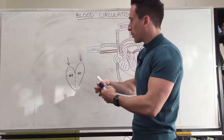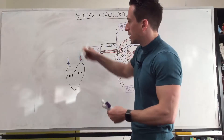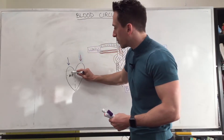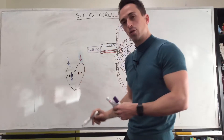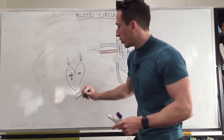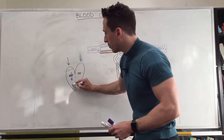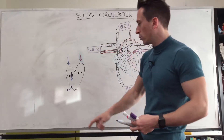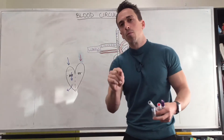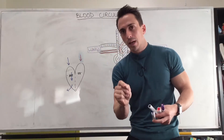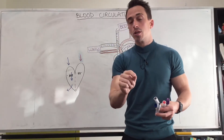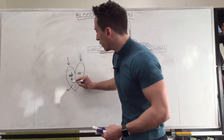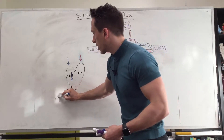So what we've got is blood coming in — let's start with the right hand side. Deoxygenated blood comes into the right atrium, through the tricuspid valve, into the right ventricle, and then from the right ventricle it pushes the blood out. If it's deoxygenated there's no point delivering it to the body — it needs oxygen, so we need to send it to the lungs, and that's exactly where it goes. From the right ventricle it goes to the lungs.